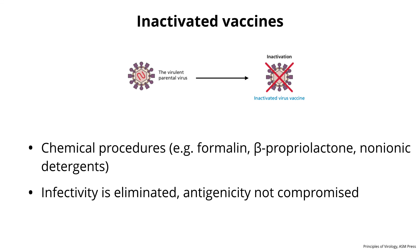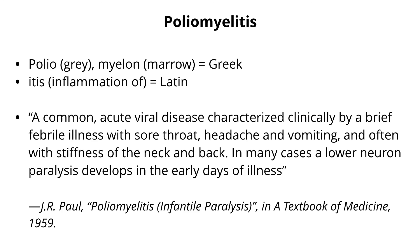Let's look at inactivated vaccines. You take an infectious virus and treat it with a chemical — formalin, propiolactone, detergent — that either breaks it up or changes the proteins so the virus is no longer infectious. So no infectivity, but you still have antigenicity — the proteins, when injected into a person, will give rise to antibodies or cells needed to protect against infection. These typically have to be injected.